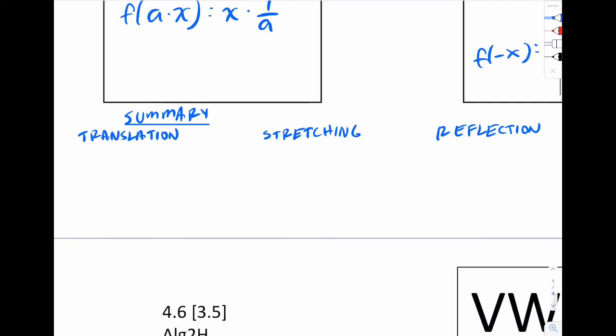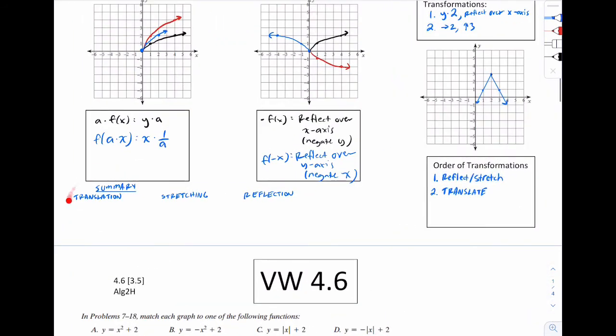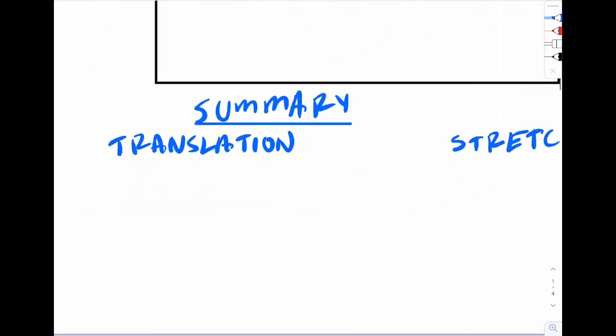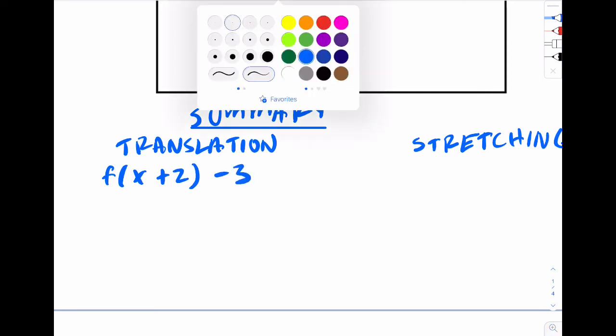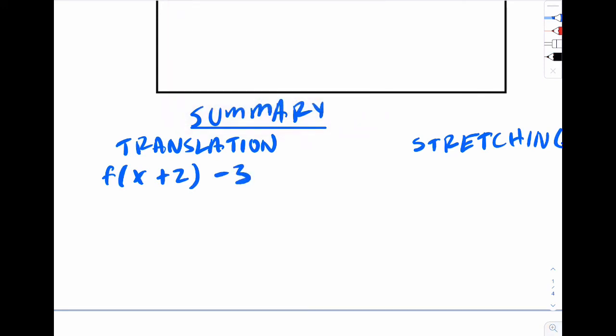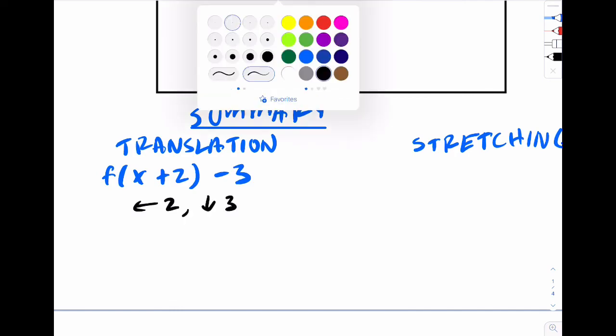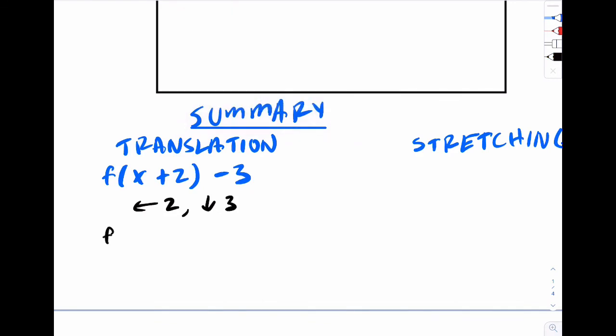So to summarize everything, on the bottom of your paper, I want you to write this down. For translation, we talked about this could happen. f(x), let's say like plus 2, and then we do minus 3. This effectively will move your graph left 2 down 3. If it were f(x) minus 2 plus 3, this is going to mean we move right 2 and up 3.